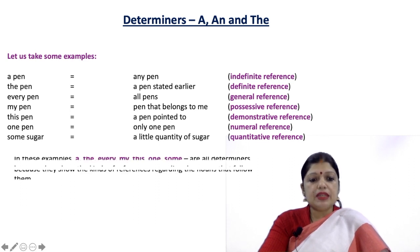In these examples, a, the, every, my, this, one, some are all determiners because they show the kinds of references regarding the nouns that follow them.